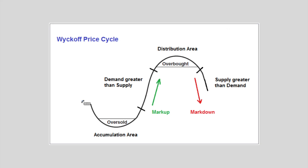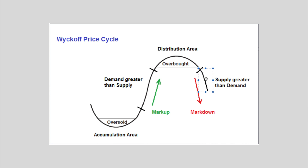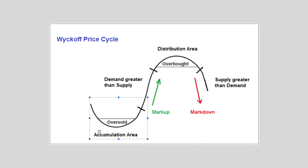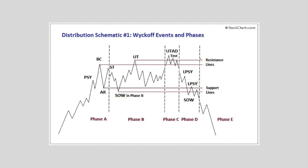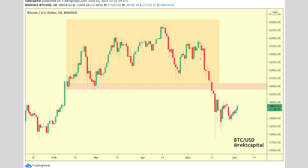We can't be talking about suddenly an accumulation area on the one hour, because we're still in the process of this distribution arguably. We can't suddenly after many many weeks now take a total U-turn and say we're oversold and in an accumulation area on the one-hour time frame. It just doesn't work that way when comparing time frames — it takes a while for the distribution to actually occur, and then once we have a significant markdown, that's when we could start talking about higher time frame accumulation.